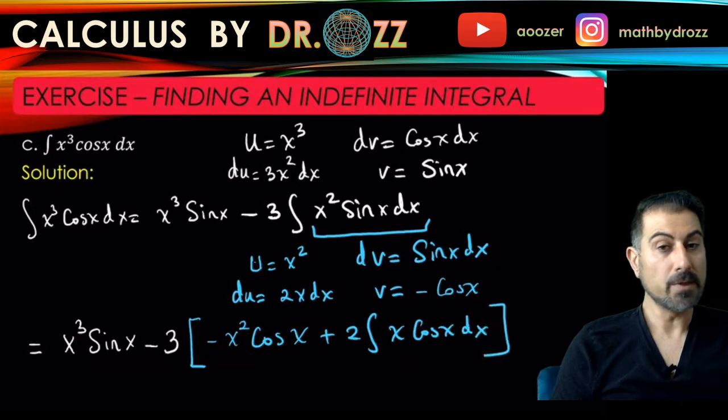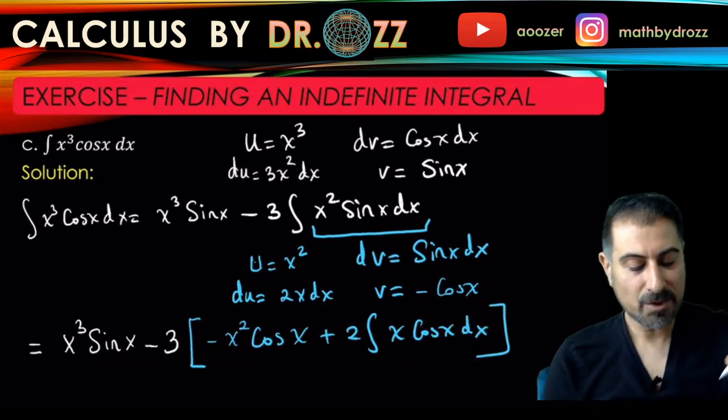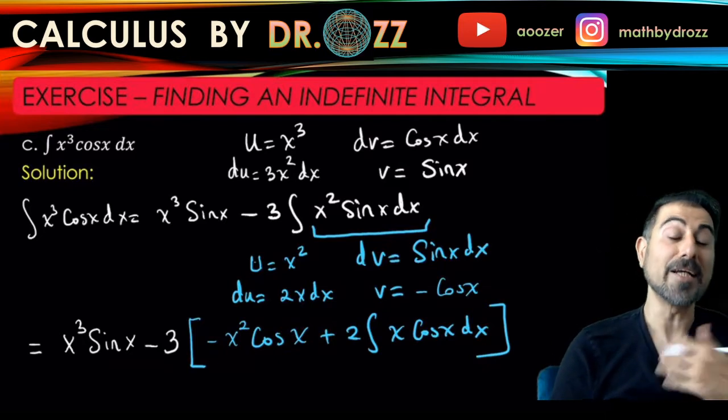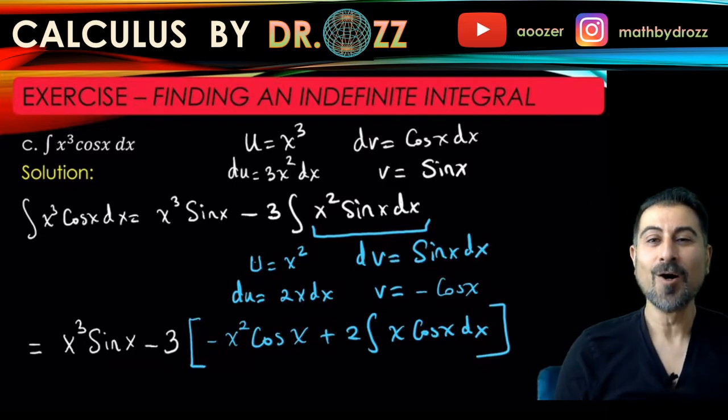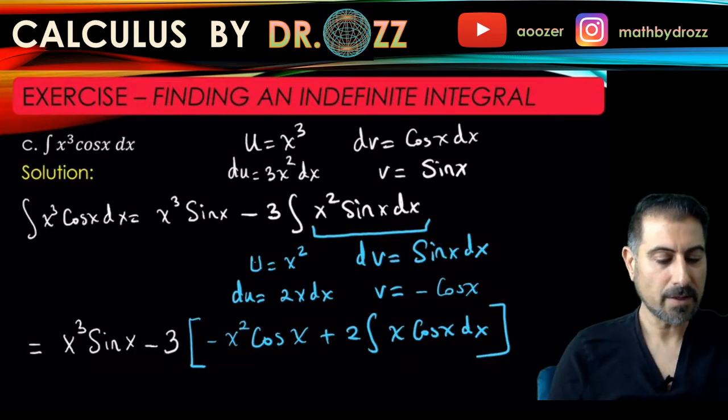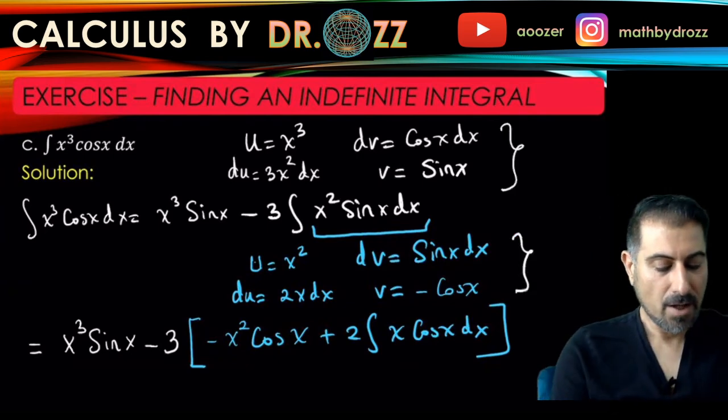We're not done yet because we still need to integrate x cosine x, which is still hard because you have polynomial against cosine. That's another application of integration by parts. So first time we use integration by parts here, right? Second time it's here, so now we are doing it again.